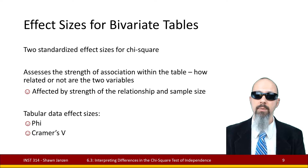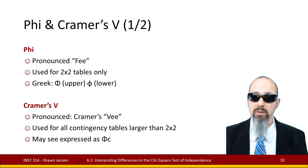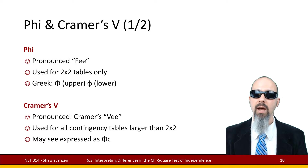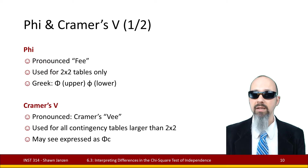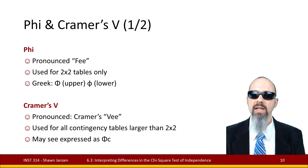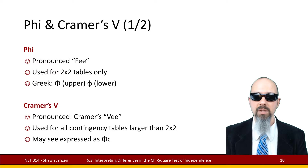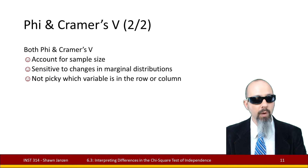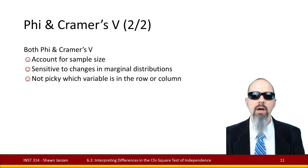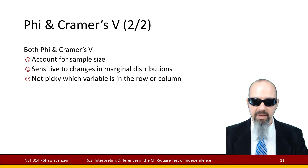The two standardized measures we'll look at are phi (pronounced either 'phi' or 'fee') and Cramer's V. Phi is only used for two-by-two tables and is symbolized by the Greek letter phi — like an O with a vertical line through it. Cramer's V is used for all other bivariate tables larger than 2×2, and may be expressed as phi with a C next to it in some sources. Both phi and Cramer's V take into account the sample size and are sensitive to changes in the marginal distributions — the spread of frequencies across the marginal rows and columns — and are not sensitive to which variables are in rows or columns.